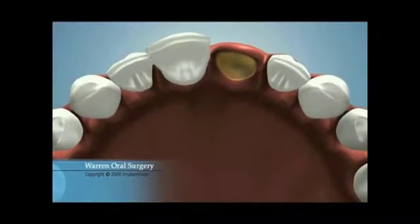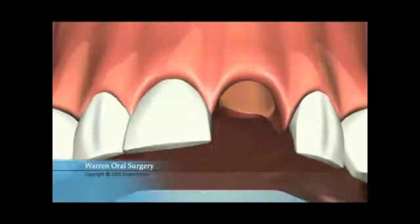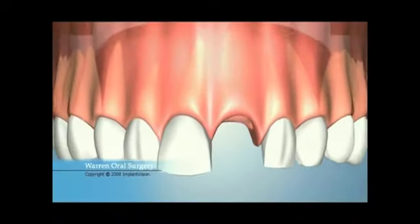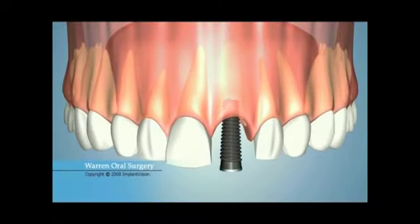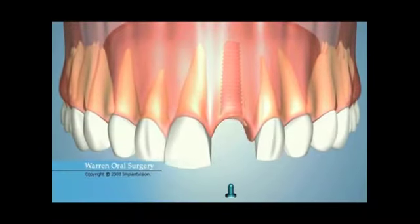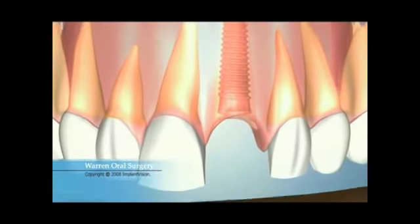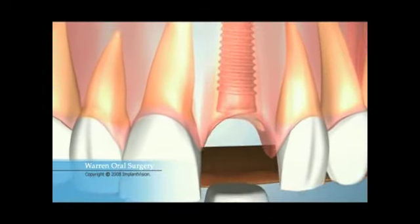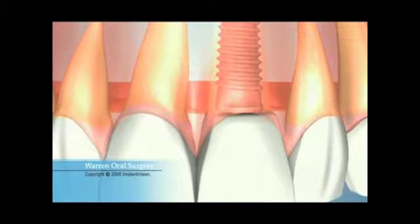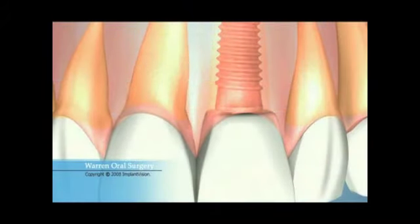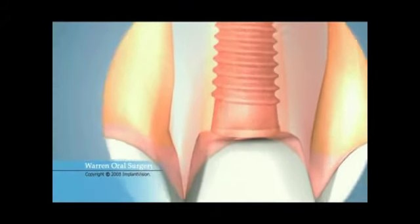The first phase of implant treatment involves creating an opening in the jawbone in preparation for the implant. The implant is then placed, followed by a healing cover. Depending on the implant system, the gums may be sutured and a temporary denture placed. The site immediately begins to heal.